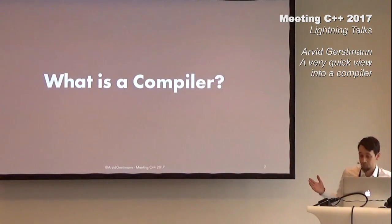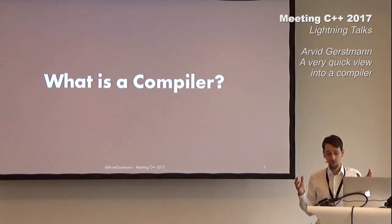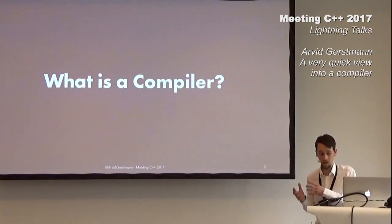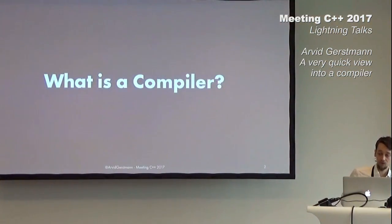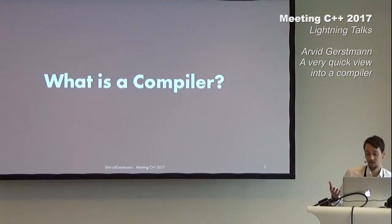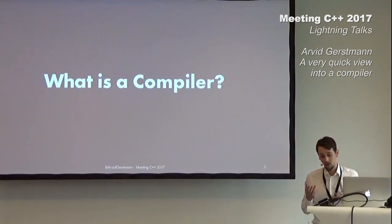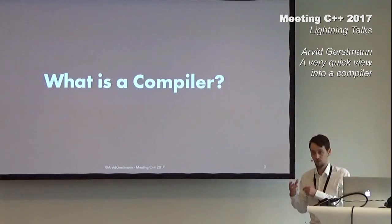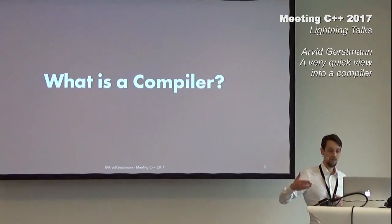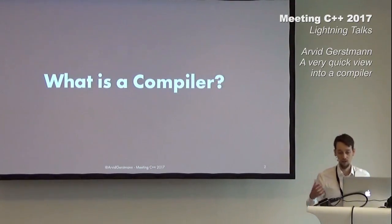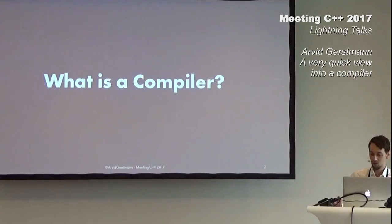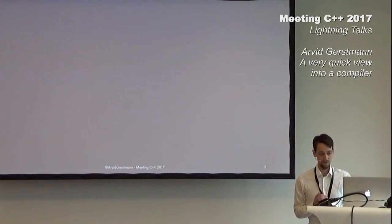What is a compiler? A compiler is a program transforming code written in one language, the source language, into another language, the target language. In terms of C++, we primarily think of a compiler as a program translating our human-readable C++ source code into machine-readable object code. Famous compilers include GCC, Clang, and Microsoft C++.